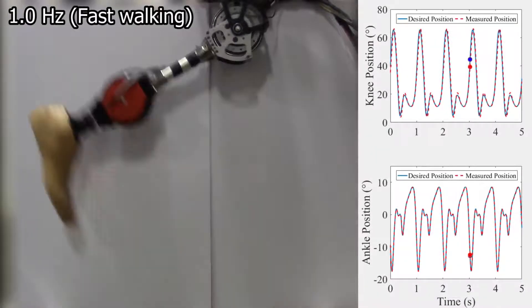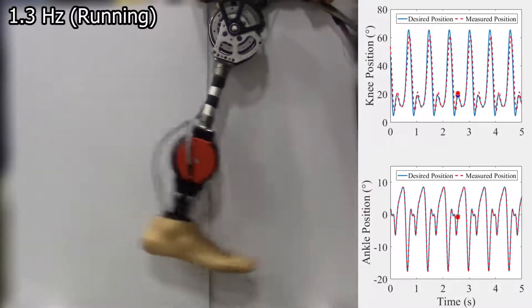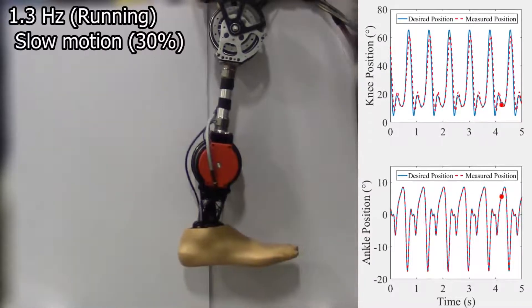Additionally, we show that the leg is completely capable of supporting position-based control paradigms for the full range of walking speeds and some running speeds.